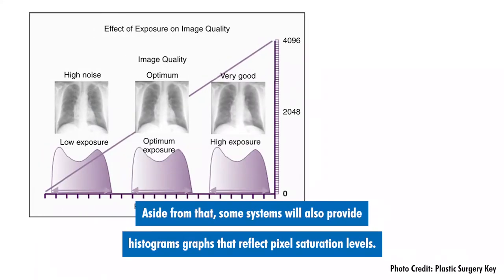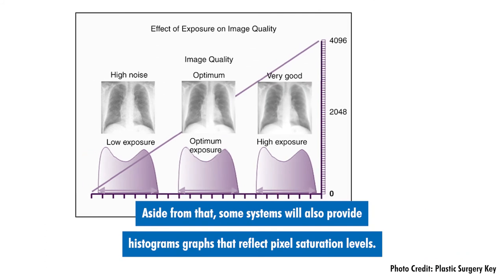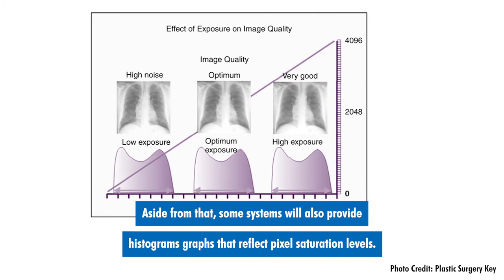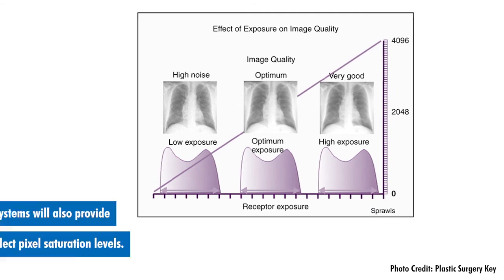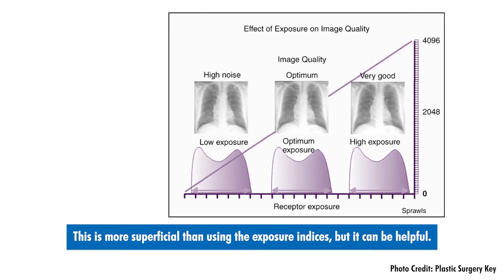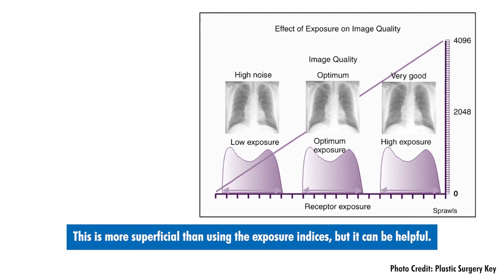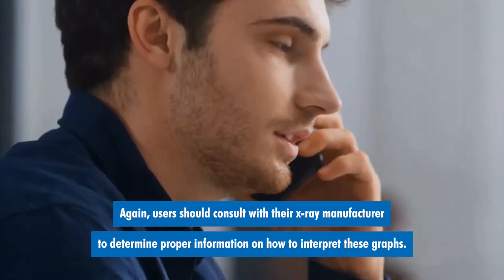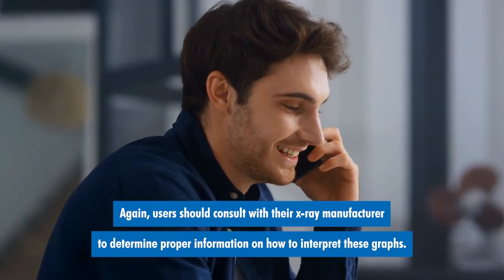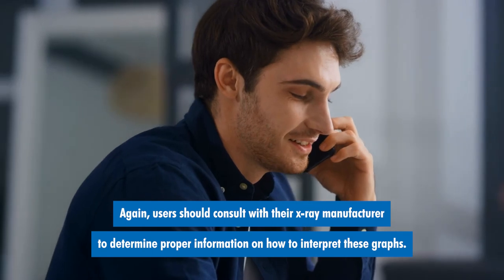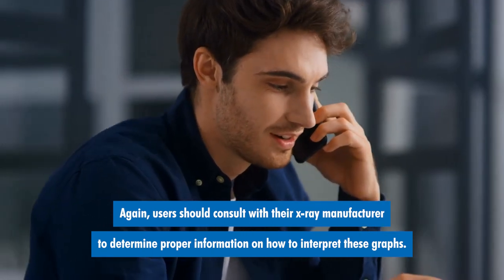Aside from that, some systems will also provide histogram graphics that reflect pixel saturation levels. This is more superficial than using the exposure indices, but it can be helpful. Users should consult with their x-ray manufacturer to determine proper information on how to interpret these graphs.